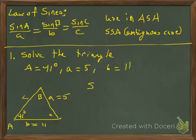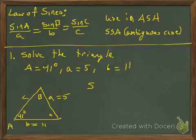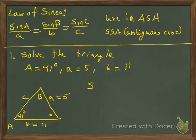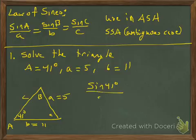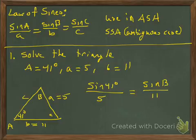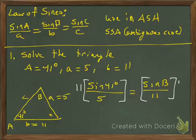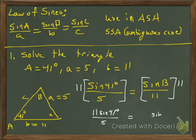Looking at what I've got: I know angle A and side a, so I definitely want to use sine of A over a. Since I don't know angle C or side c, I'll use sine of B over b because I know side b is 11. So: sine of 41 degrees over 5 equals sine of B over 11. We're going to isolate the sine of B by multiplying both sides by 11, giving us 11 sine of 41 degrees all over 5 equals sine of B.